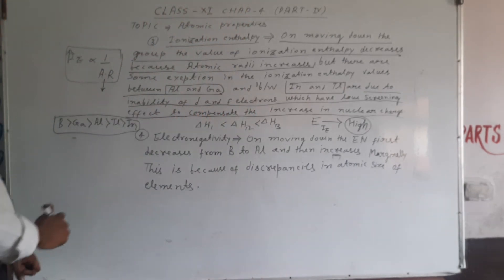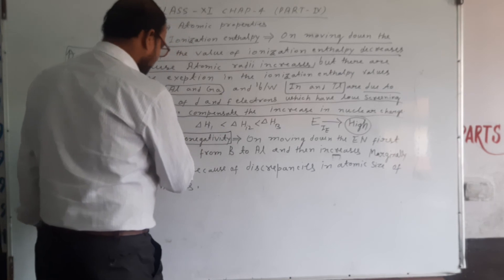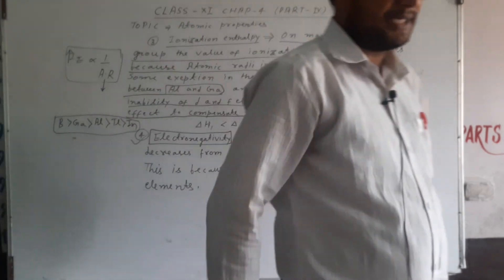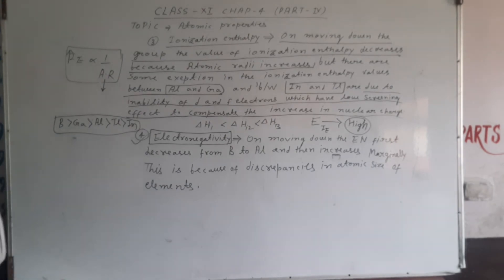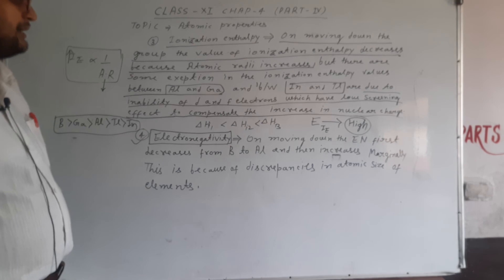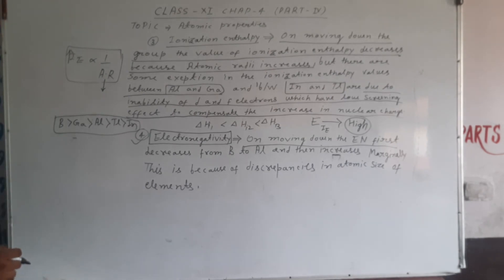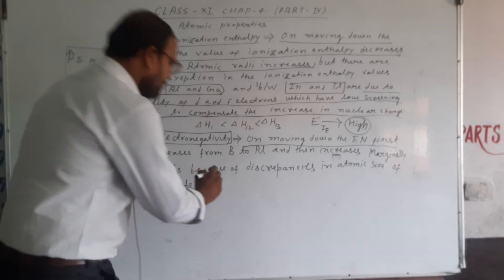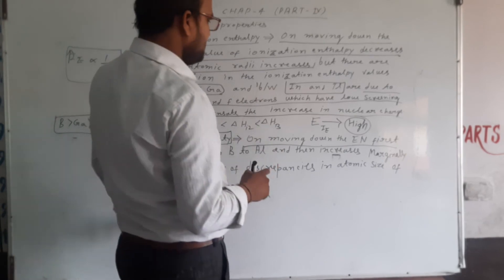The last atomic property is electronegativity. As we discussed for s-block elements — alkali metals and alkaline earth metals — electronegativity is directly proportional to ionization energy. On moving down the group, electronegativity normally decreases. But in the Boron family, electronegativity first decreases from Boron to Aluminium, and then increases marginally.